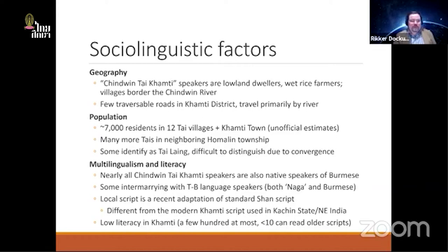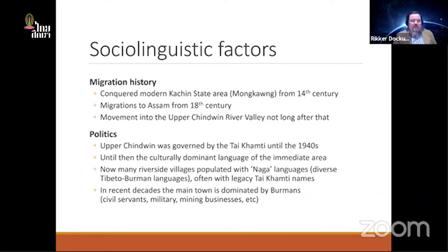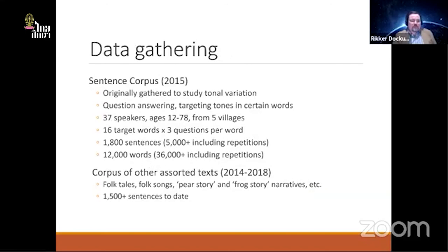Literacy is fairly low, and they use an adaptation of Shan script — not the Khamti script used in the other two main Khamti areas. Use of the language was locally criminalized until very recently; in the last five years those restrictions have been lifted. According to local records, they migrated from Assam across the Naga Hills in the 18th century and were also the governing group in the area until the 1940s.